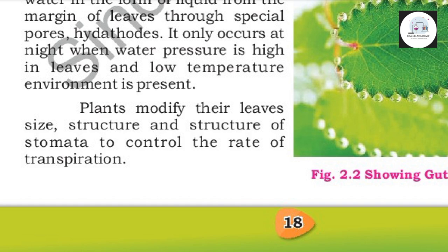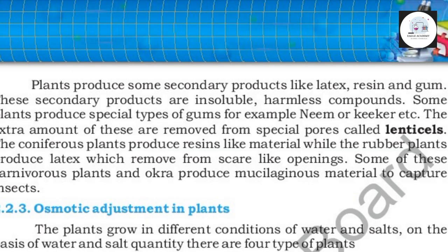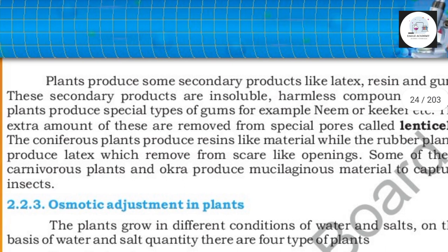Plants produce some secondary products like latex, resins, gums, and chemicals. These secondary products are insoluble in water and are harmless to the plant.